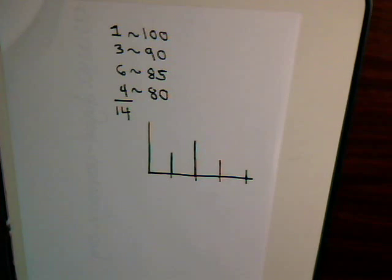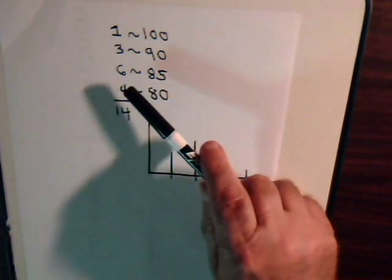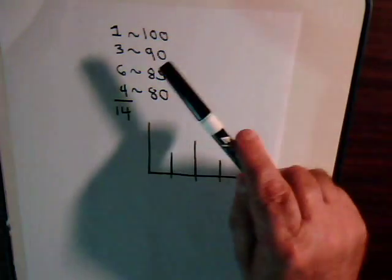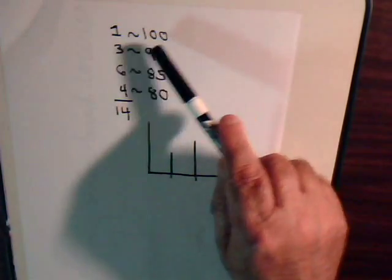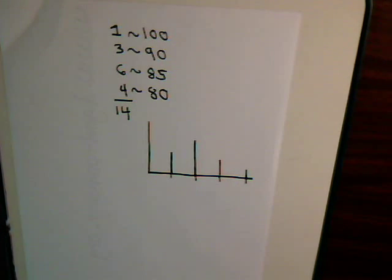So of course to get the average test score we would add them all up and divide by 14. When we say add them all up, that would mean we'd have 80 times 4 plus 85 times 6 plus 90 times 3 plus 100 times 1, then divide that whole sum by 14 to get the average score.